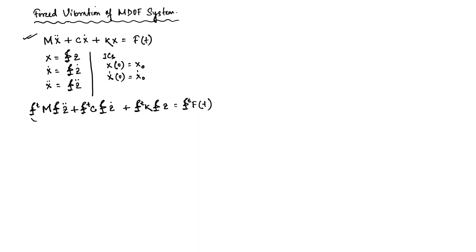This gives us a decoupled mass matrix, which we call M_d, and then we also have our decoupled stiffness matrix K_d.